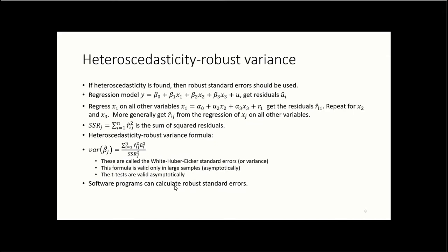If we do find heteroscedasticity, the first solution is the heteroscedasticity-robust variance, i.e., robust standard errors. To compute this, we first regress x1 on all other variables (x2 and x3) and collect the residuals r-hat₁. We repeat for x2 regressed on x1 and x3, and x3 on x1 and x2, obtaining residuals r-hat_j for each variable xj.